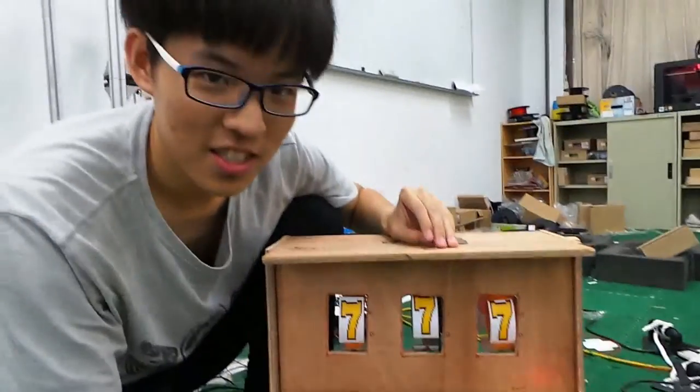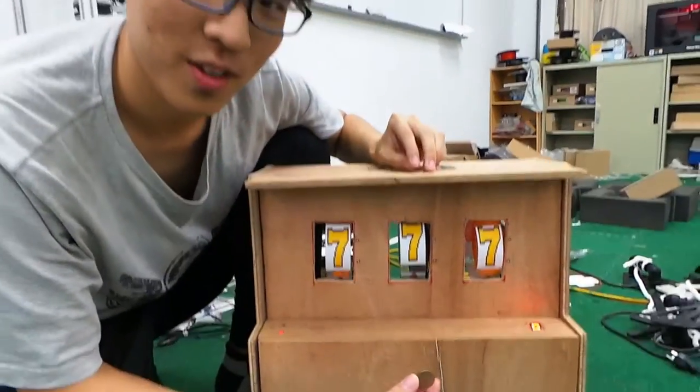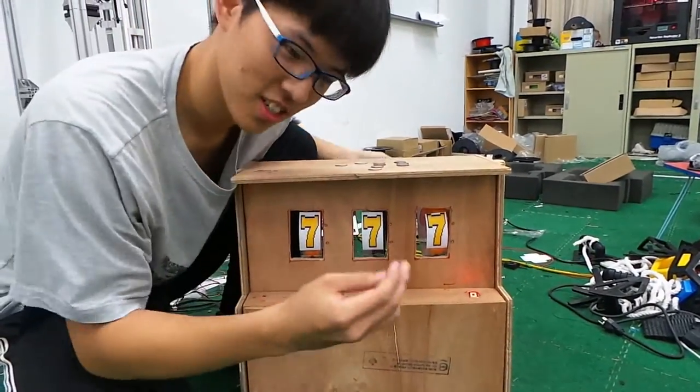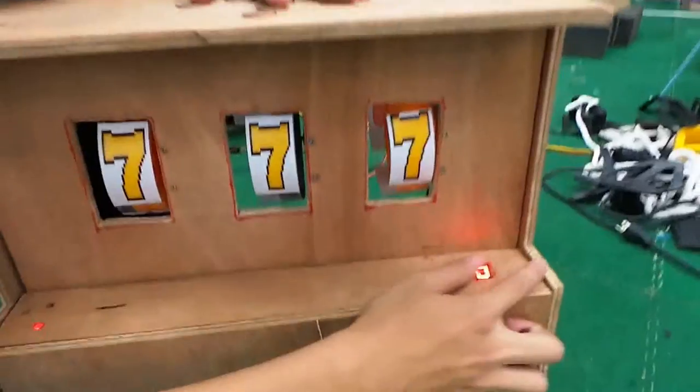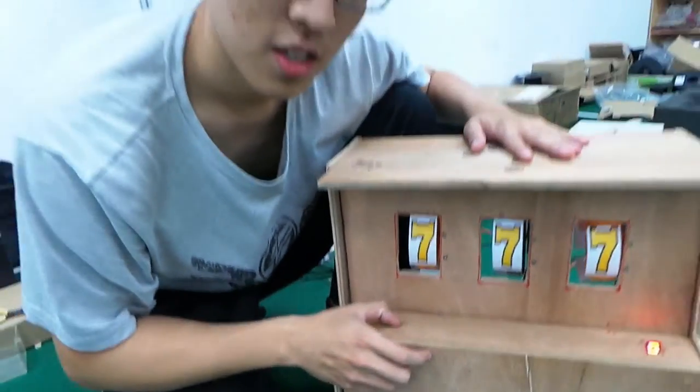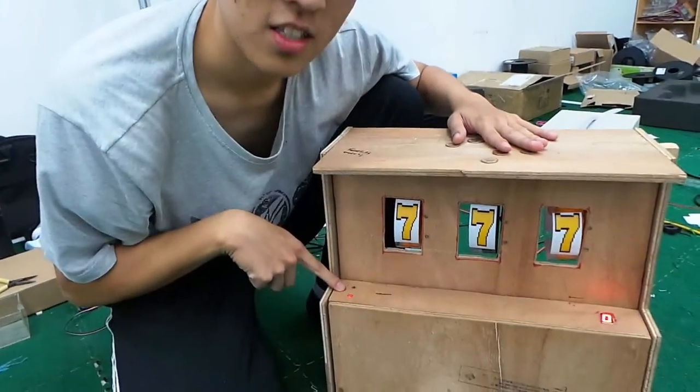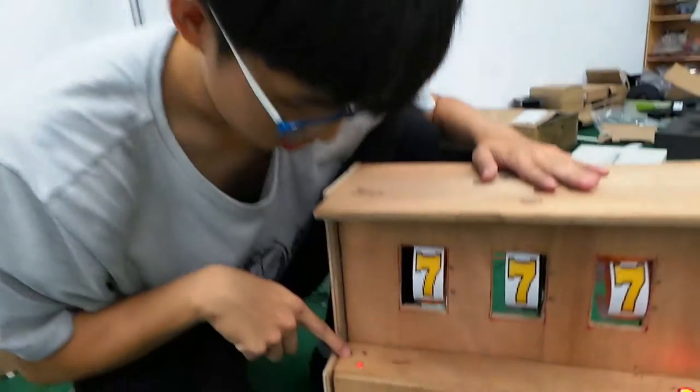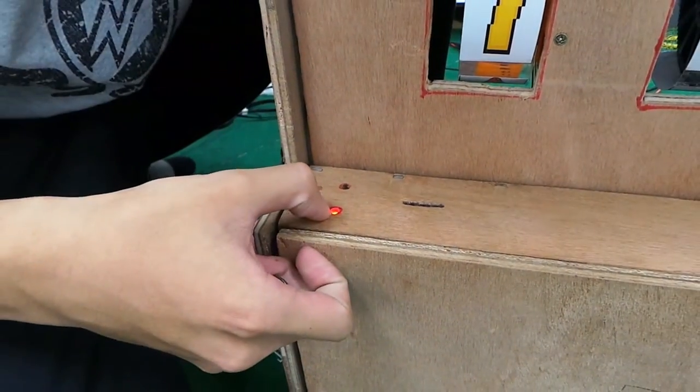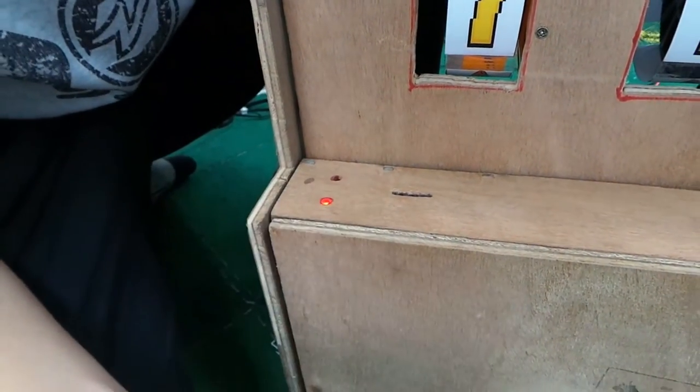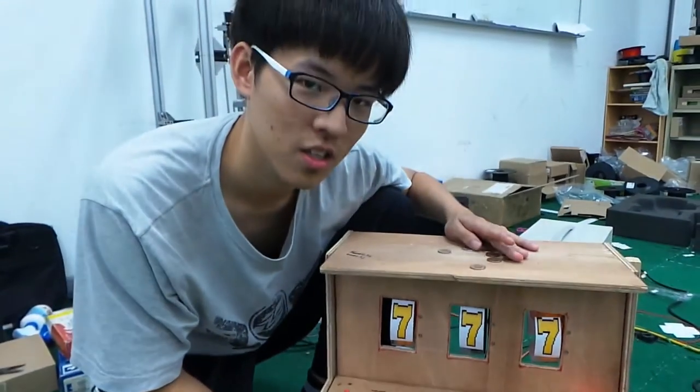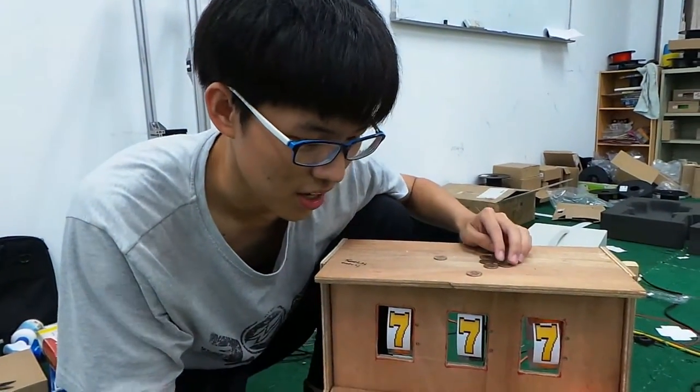So let's start to explain the rules. Let's look at the panel here. Here is the coin box, and here the light is to tell you if you can play the game. Now it's red, which means you still have no coins in it, so you cannot play the game yet.